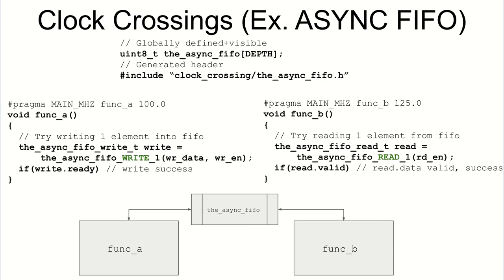Since these global variables can be used in multiple functions, and functions can exist in different clock domains, you can actually do clock domain crossings this way. The tool generates helper functions for this.